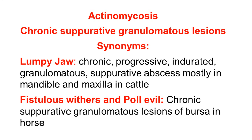One disease that is very commonly occurring in cattle is lumpy jaw — a swelling on the jaw. It is a chronic, long-duration, progressive, slowly developing, indurated hard mass with granulomatous lesions containing suppurative abscesses, and is mostly seen in the mandible of cattle. This is the most common presentation.